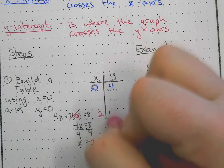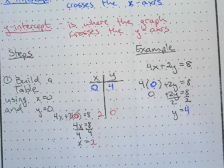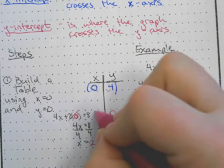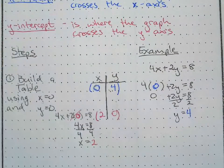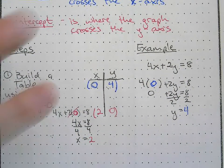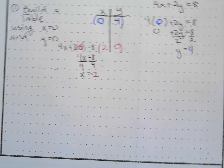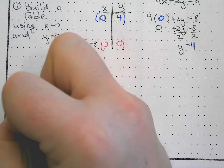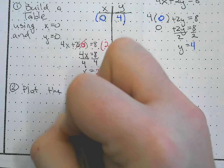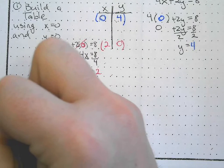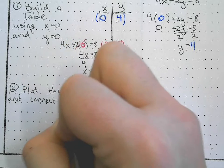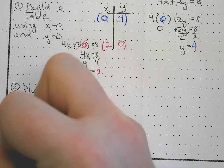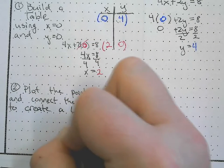Now we have our two points: 0 comma 4 and 2 comma 0. We're ready to graph. We'll plot the points and connect the dots to create a line.